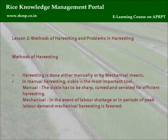Lesson 2 — Methods of harvesting and problems in harvesting. Harvesting is done either manually or by mechanical means. In manual harvesting, the sickle is the most important tool. The sickle has to be sharp, curved, and serrated for efficient harvesting.